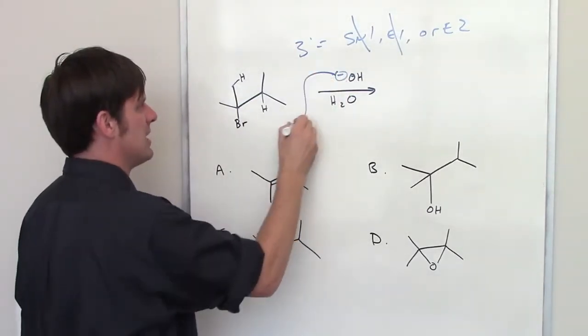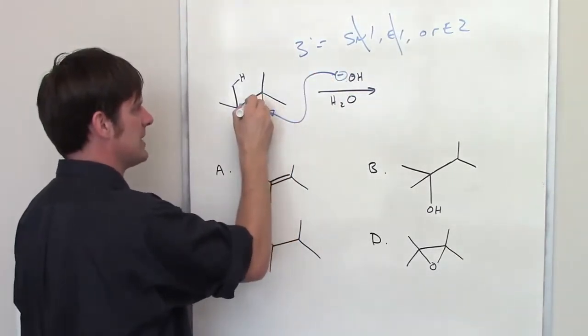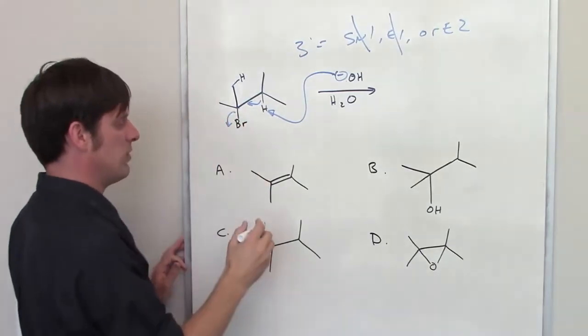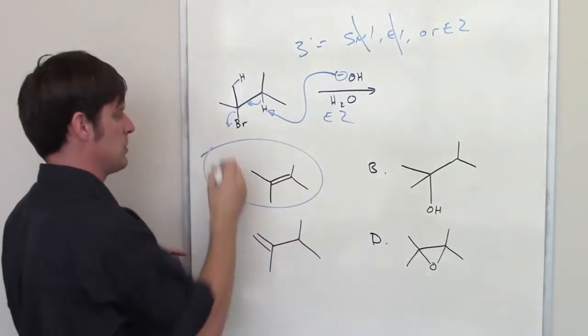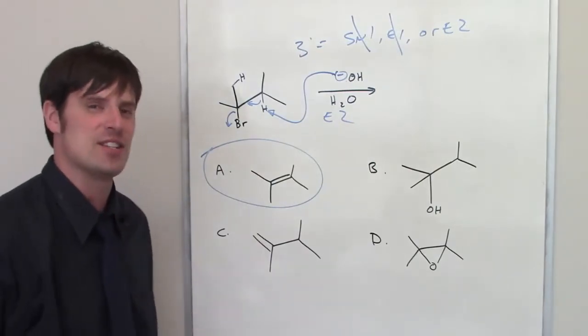Hence, this hydroxide is going to come in here, grab that hydrogen, dump these electrons down, kick off the bromide in one fell swoop, E2 style, and form this as my major product. So the correct answer is A.